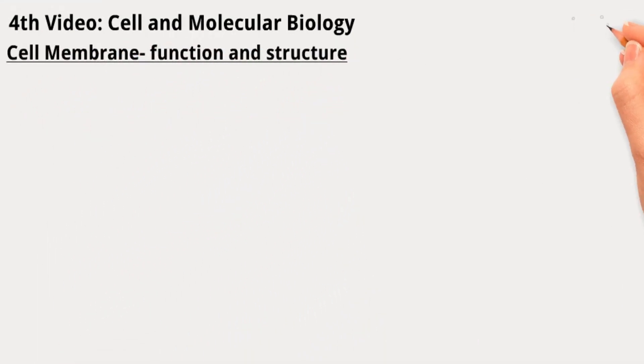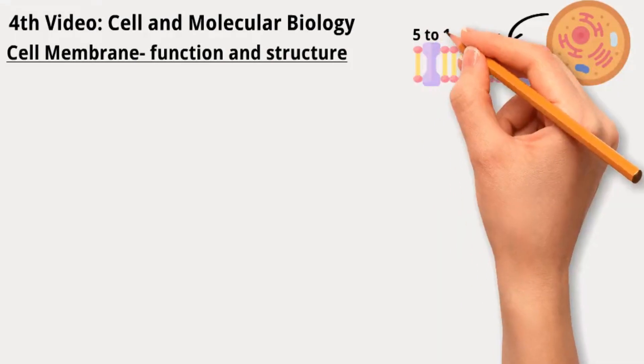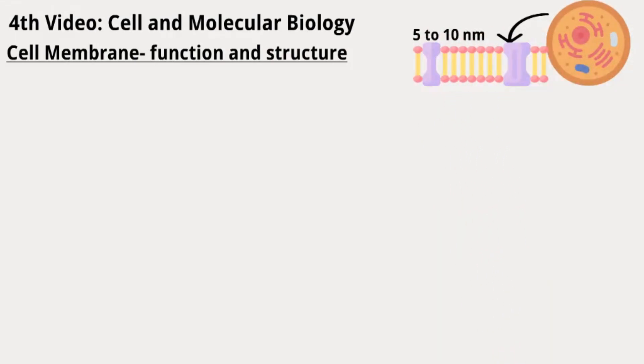Cells have a delicate barrier called the plasma membrane, which is very thin — 5 to 10 nanometers. This membrane is so thin that it can't be seen with a regular light microscope.